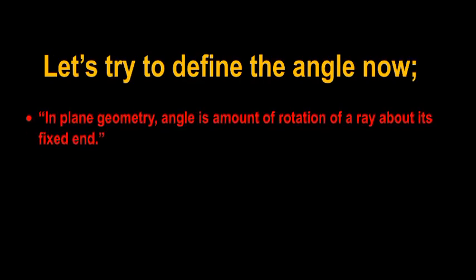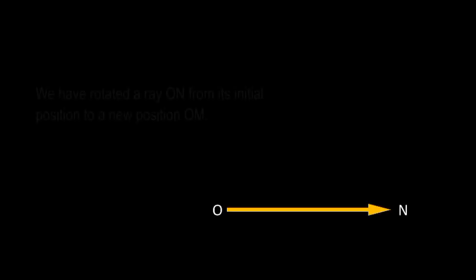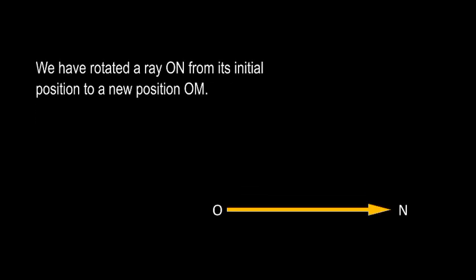Let's try to define the angle now. In plane geometry, angle is the amount of rotation of a ray about its fixed end. See this figure. We have rotated a ray ON from its initial position to a new position OM.